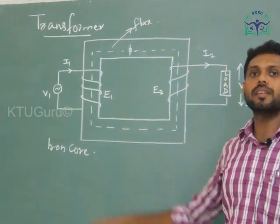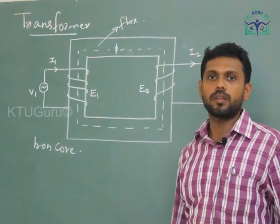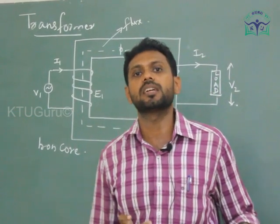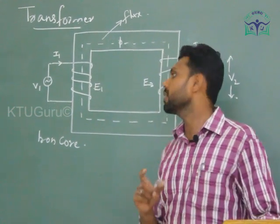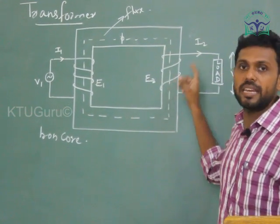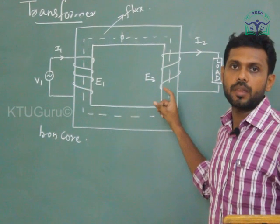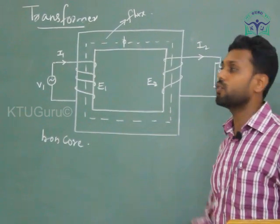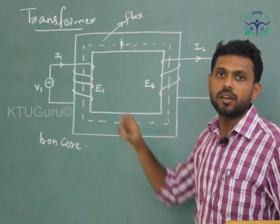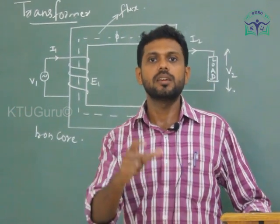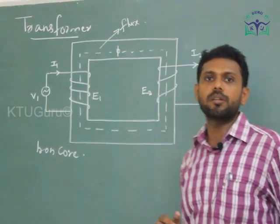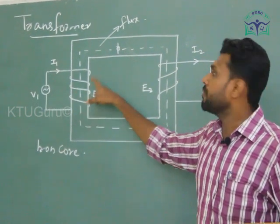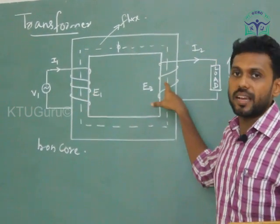This is a transformer core. By the principle of mutual induction — that is, the phenomenon in which an EMF E1 is induced in the secondary coil with the application of voltage in the primary coil, or due to the effect of the magnetic field produced by the primary winding — that phenomenon is called mutual induction. By the principle of mutual induction, an EMF is induced in the secondary winding.